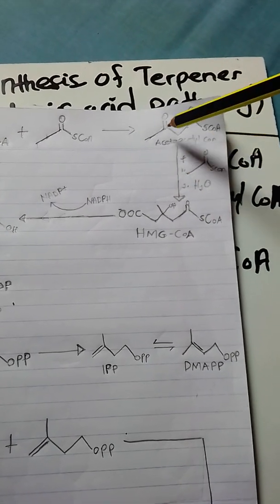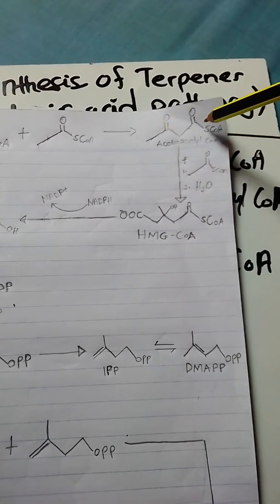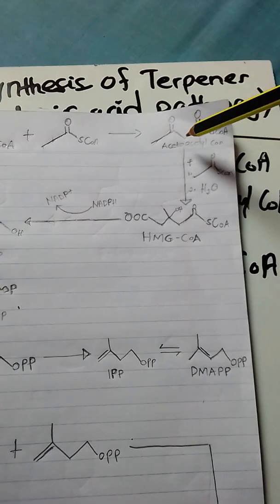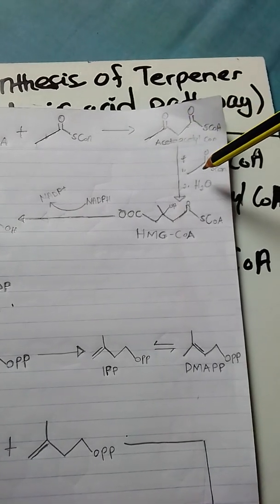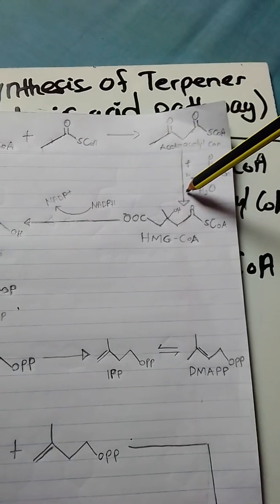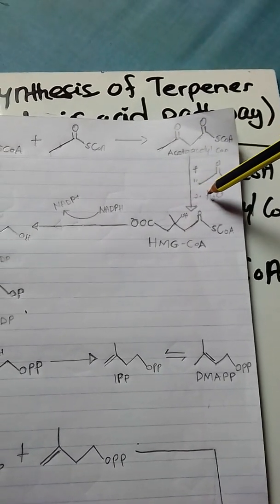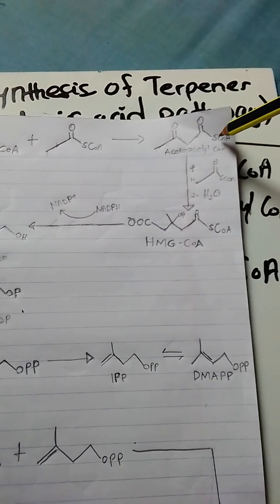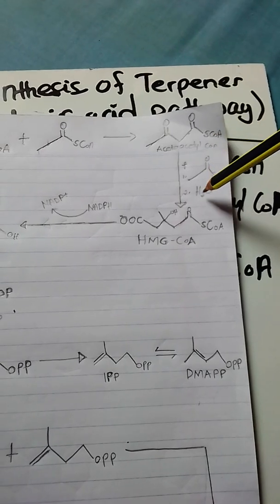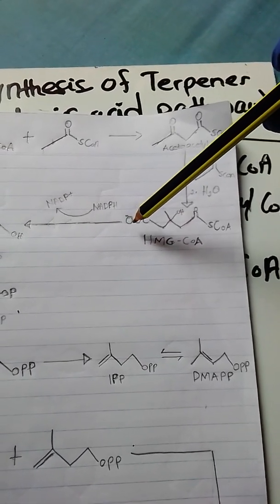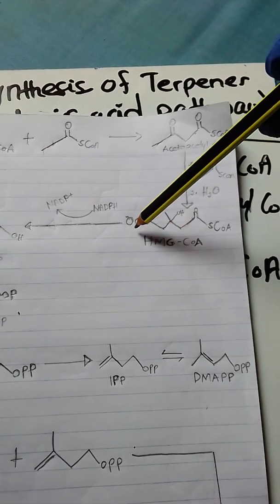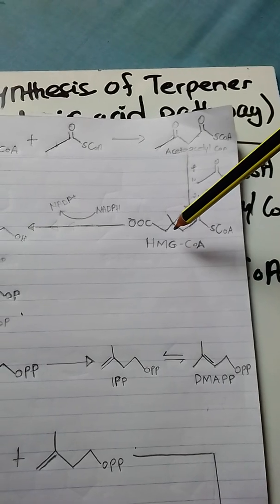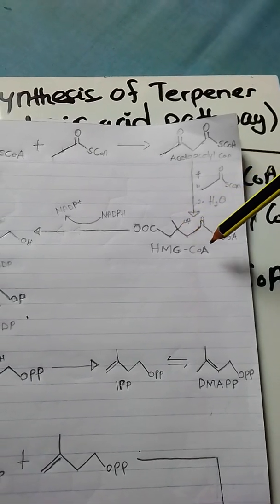When this one reacts with this, we get two coenzymes reacted with this. But because of hydrolysis, one coenzyme portion will be hydrolyzed to form a carboxylate. So the resulting compound is the hydroxymethylglutaryl CoA, or HMG-CoA.